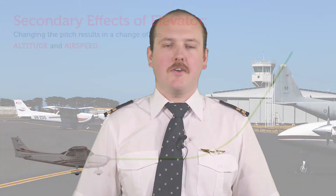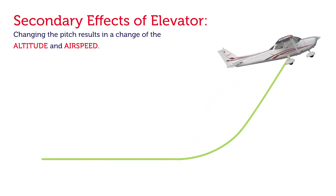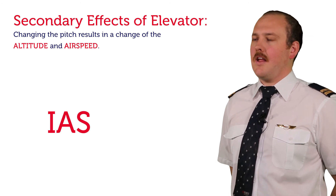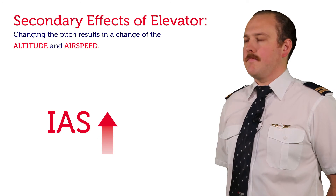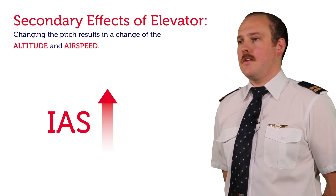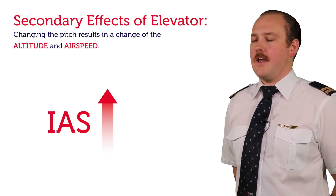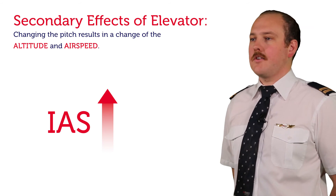In addition to primary effects, we also have secondary effects of controls. The secondary effect of elevator: when we apply back pressure and raise the nose to climb without changing the power setting, the airspeed will decrease — similar to driving a car up a hill without pressing the accelerator. Conversely, when descending without changing power, the aircraft will accelerate, like a truck rolling downhill. Pushing forwards on the control column causes descent, and the secondary effect is an increase in airspeed.